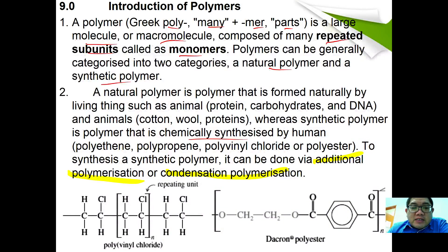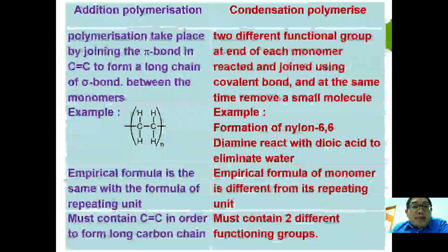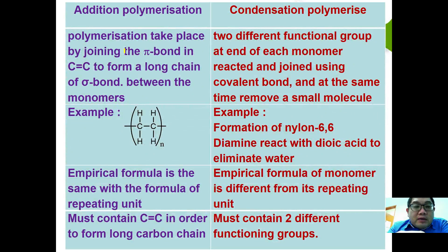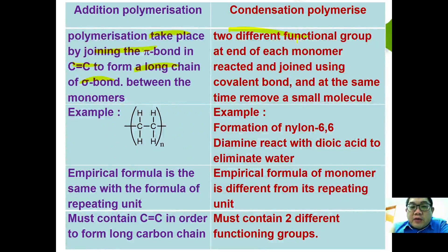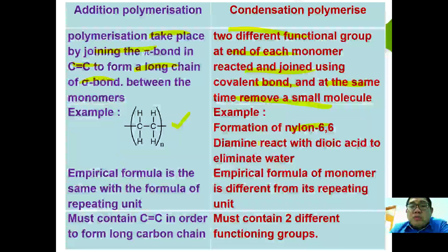Here are examples of polymers formed via additional polymerization, and here are examples formed via condensation polymerization. Additional polymerization is defined as a polymerization that takes place by joining the pi bonds in C=C to form a long chain of sigma bonds between monomers. Condensation polymerization involves two different functional groups at each end of each monomer reacting to join via covalent bonds while removing a small molecule. Examples of additional polymerization include polyethylene and polyvinyl chloride (PVC). An example of condensation polymerization is nylon 6-6, which comes from the reaction between diamine and dioic acid.